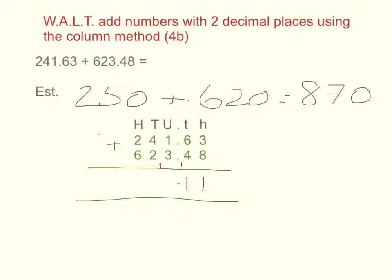One unit, add three units, add one unit is five units. Four tens and two tens is the same as six tens. And two hundreds add six hundreds is equal to eight hundreds.